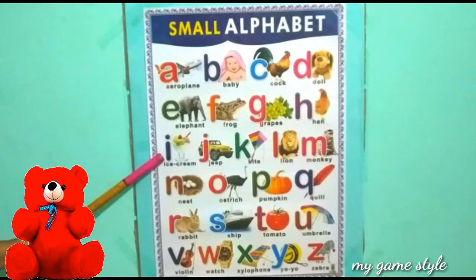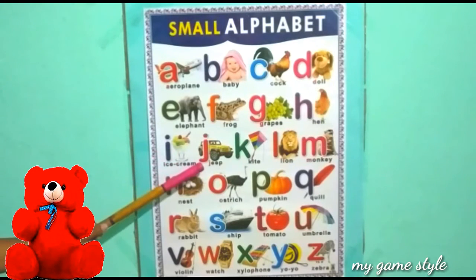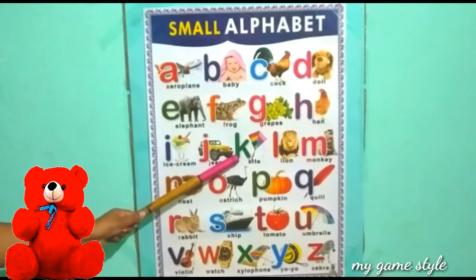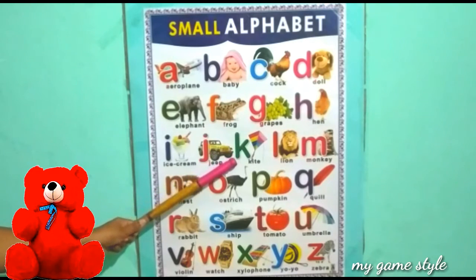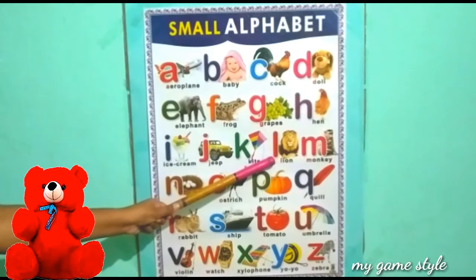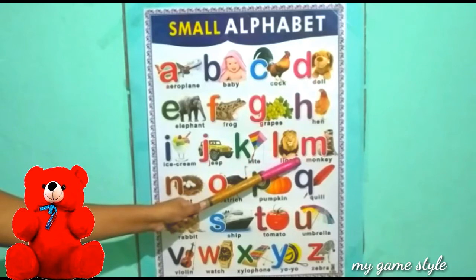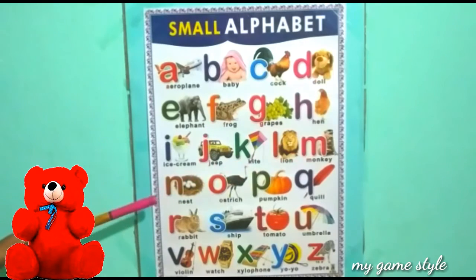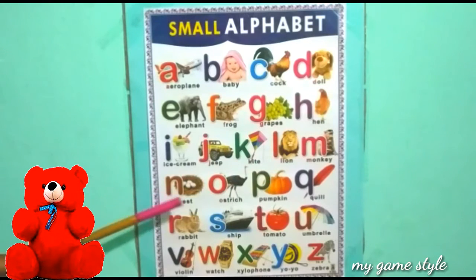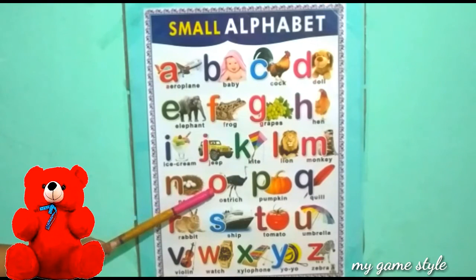J for Jeep, K for Kite, L for Lion, M for Monkey, N for Nest, O for Ostrich.